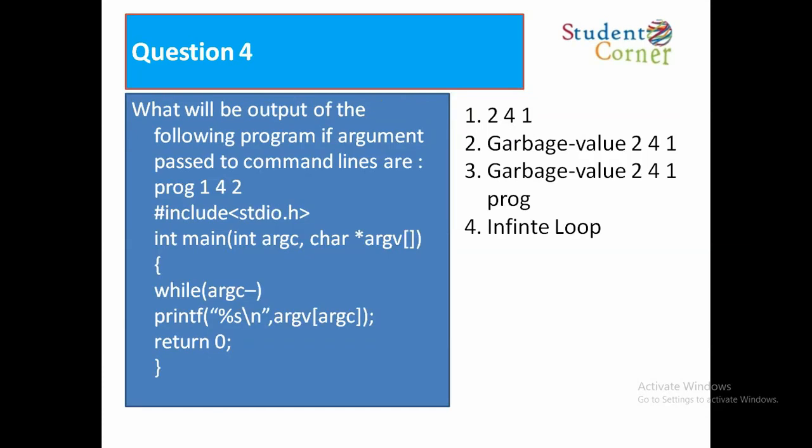Question 4: What will be the output of the following program if argument passed to command line arguments is 1, 4, 2? Program: #include stdio.h, int main(int argc, char* argv[]). While(argc--), printf("%c", *argv[argc]). Option 1: 241. Option 2: Garbage value 241. Option 3: Garbage value 241 prog. Option 4: Infinite loop. The answer is 241 — here we are printing percentage c, meaning character.